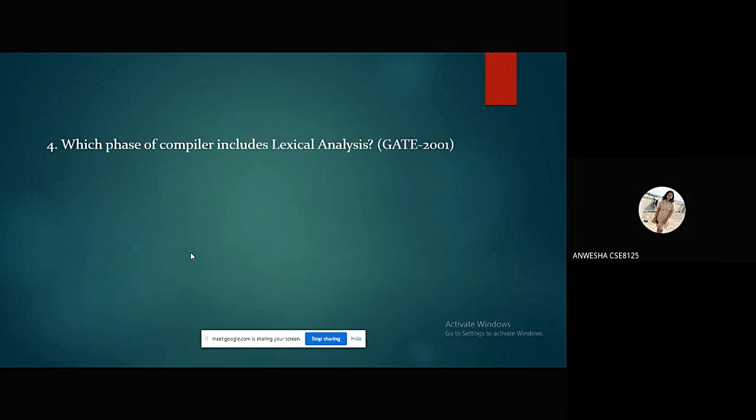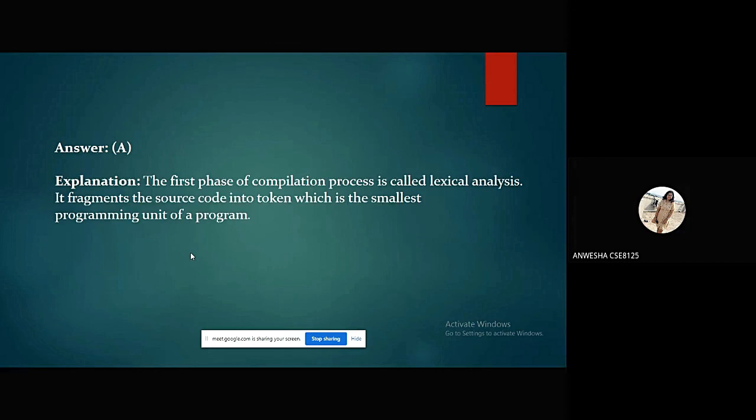Here we have the last question to our presentation. Which phase of compiler includes lexical analysis? GATE 2001 question. The options are: option A, 1; option B, 2; option C, 3; and option D, it's a primary function, not in any phase. The answer is option A, 1. The explanation is: the first phase of compilation process is called lexical analysis. It fragments the source code into tokens, which is the smallest programming unit of a program.